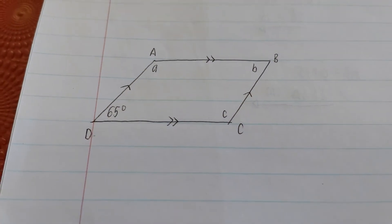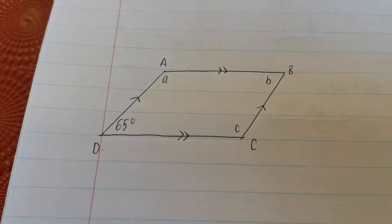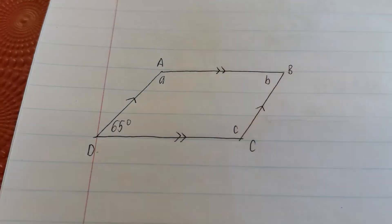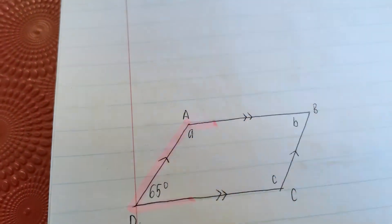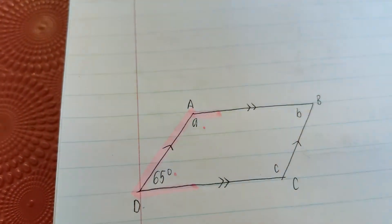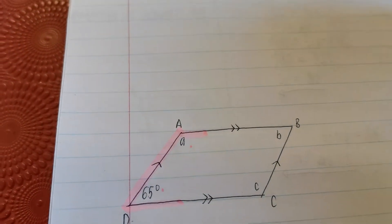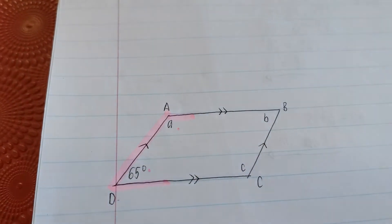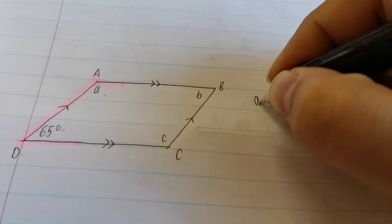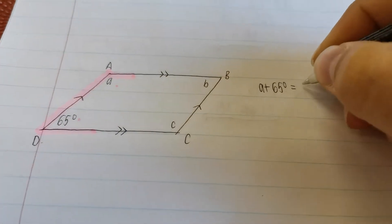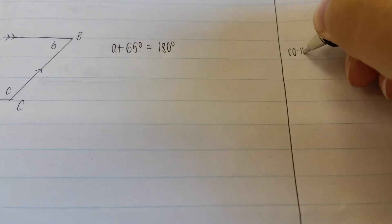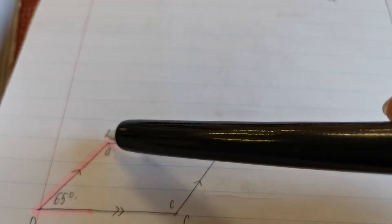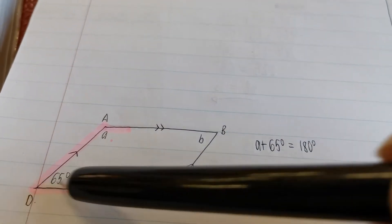Because of the parallel lines, there's a U-shape — meaning this angle plus this angle must give us 180 degrees, because that's what co-interior angles means. So let's write that down: 180 degrees. Reason: co-interior angles, AB parallel to DC.